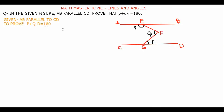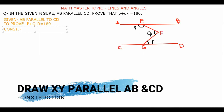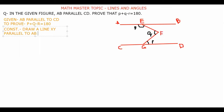Right now I am not getting any direct relationship between p, q, and r. But I can see that if I draw a construction — a line parallel to AB and CD — then I will get that relationship. So my first step is Construction: draw a line, name it XY, parallel to AB and CD.